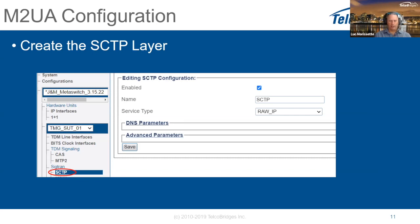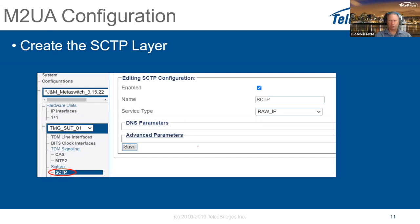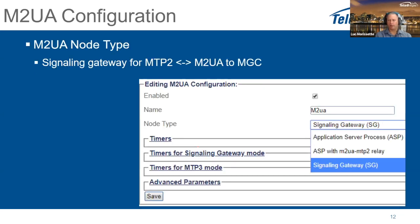For M2UA configuration, you first need the IP interface already configured. The next step is to configure SCTP — just click on it and set the service type, which is always raw IP. DNS is not used in a telecom environment. Advanced parameters are seldom changed. SCTP is really easy to configure.